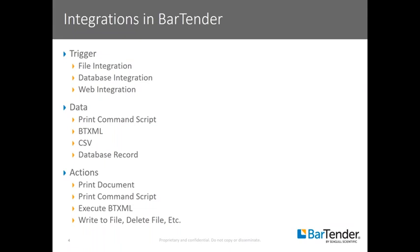The trigger is what initially triggers the integration to occur. It is essentially what we are waiting for to execute what the integration has been programmed to do. Some examples of this are a file integration — a file being dropped into a directory — a database integration, or a web integration, which would be receiving a web request. Secondly, it is going to be the data: the format or structure of the data coming in over the integration method.